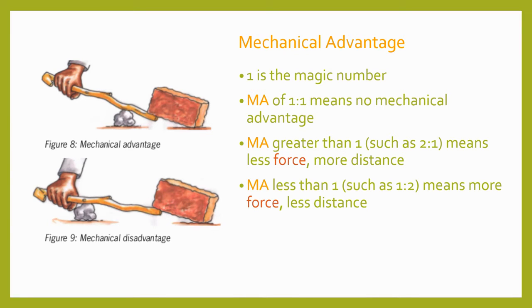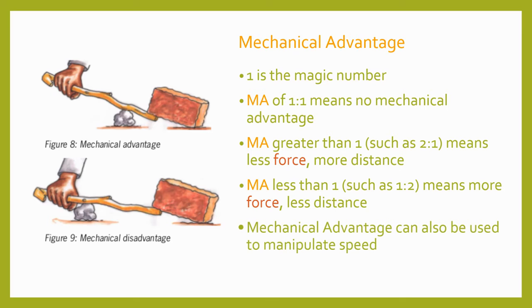Mechanical advantage can also be used to manipulate speed. Since the effort and load forces cover their respective distances in the same amount of time, the force traveling farther necessarily travels faster. This is how mechanical advantage is used in something like a baseball bat, a lacrosse stick, or a catapult.